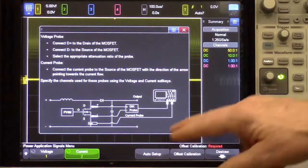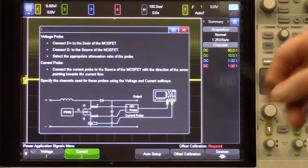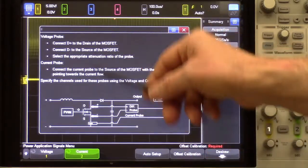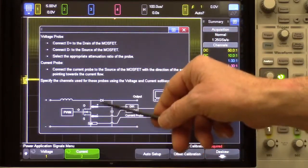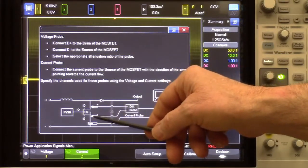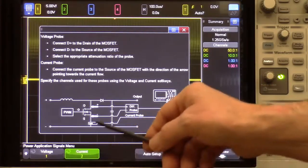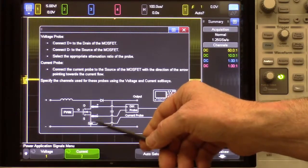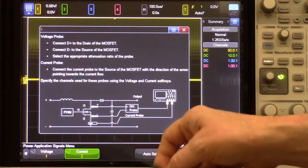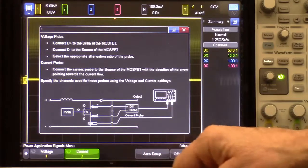Next, I'll go into the Signals menu. Here I can see a diagram very similar to what I showed earlier. It gives me some helpful hints on how to connect my probes. So I've got my differential active voltage probe connected across the drain and the source, and it's going to Channel 1 of the scope. And I've got my current probe connected to the source terminal of the switching transistor, and that's connected to Channel 2.